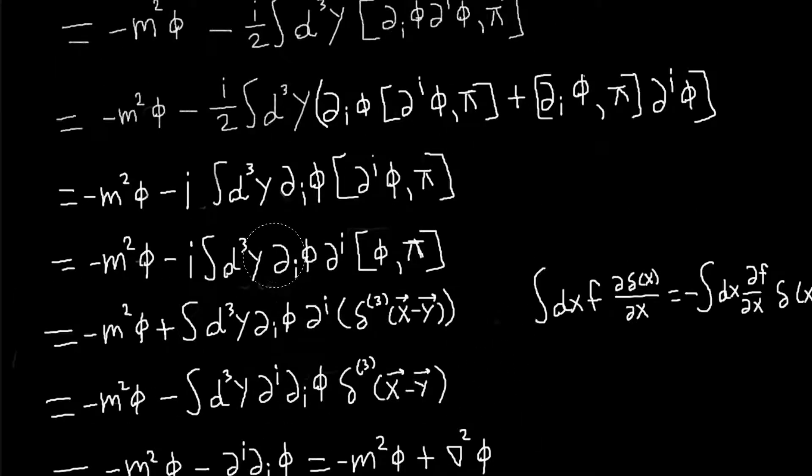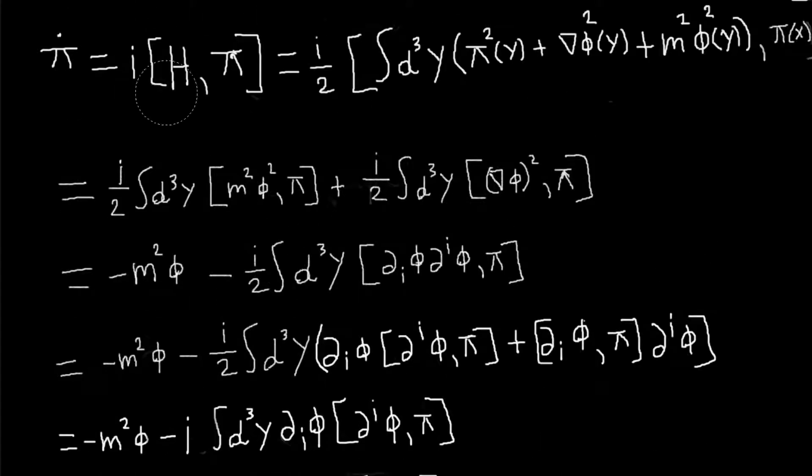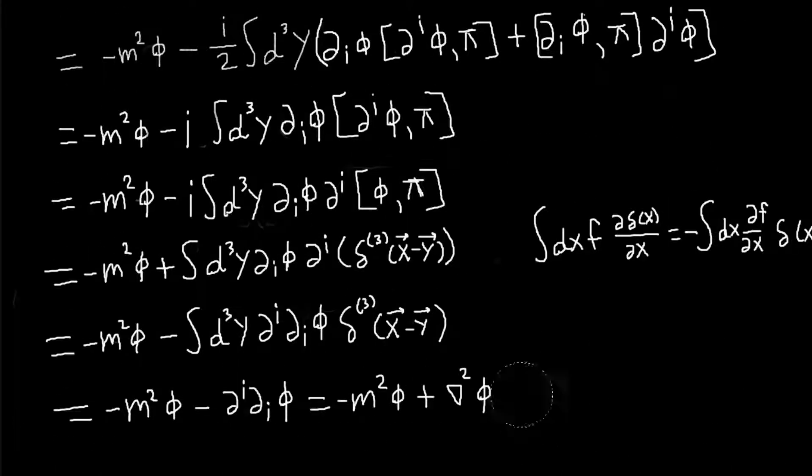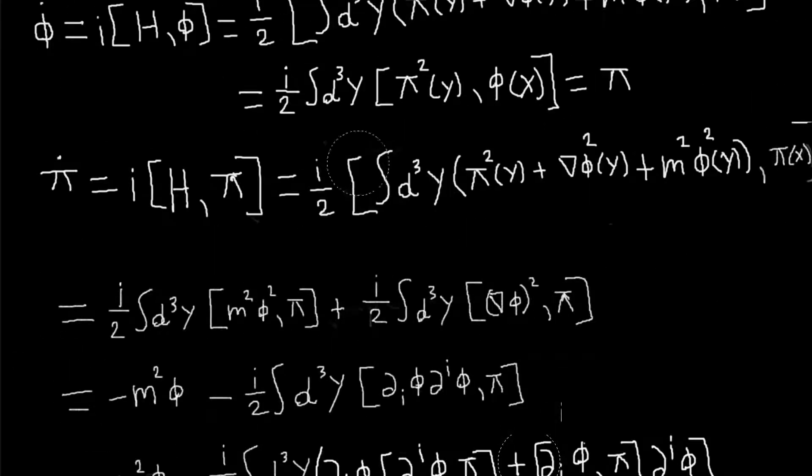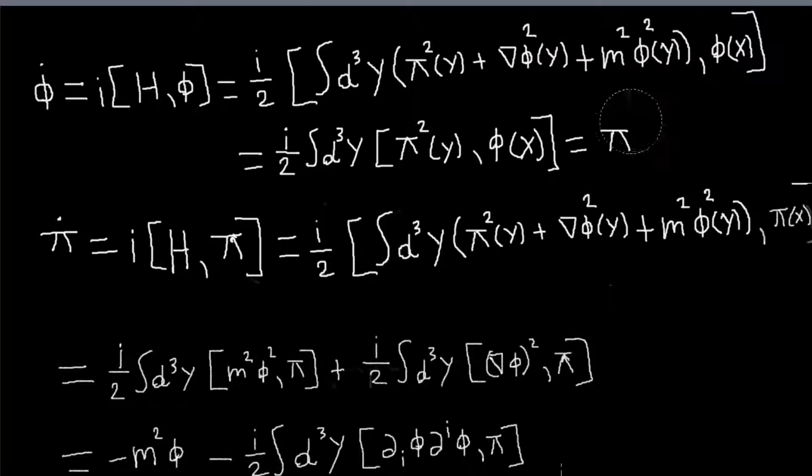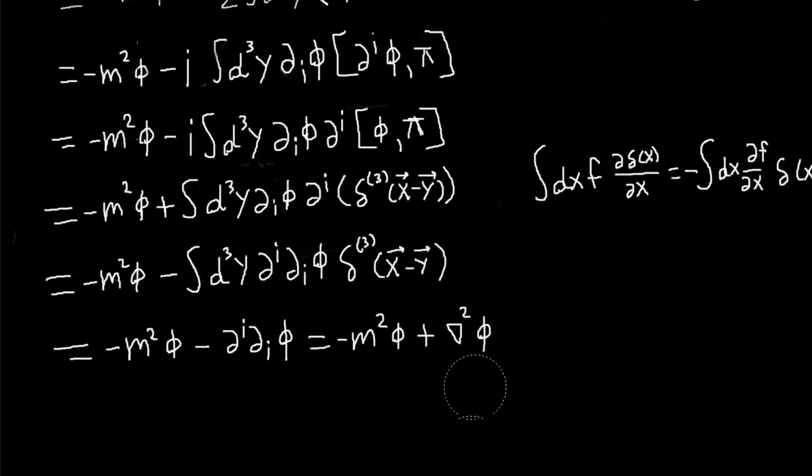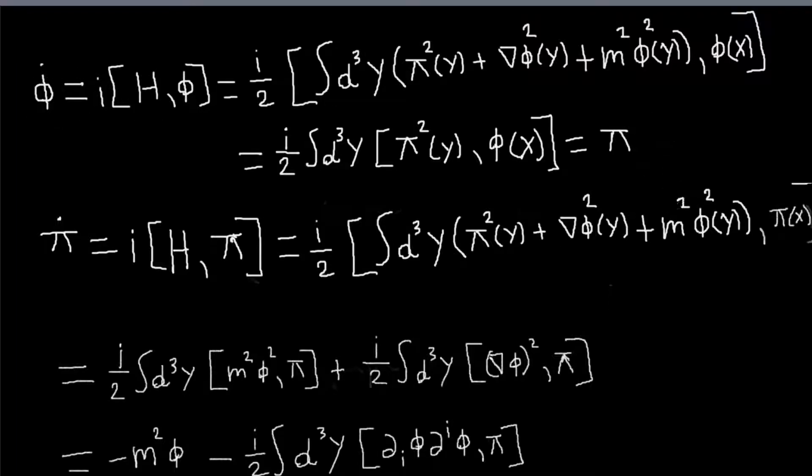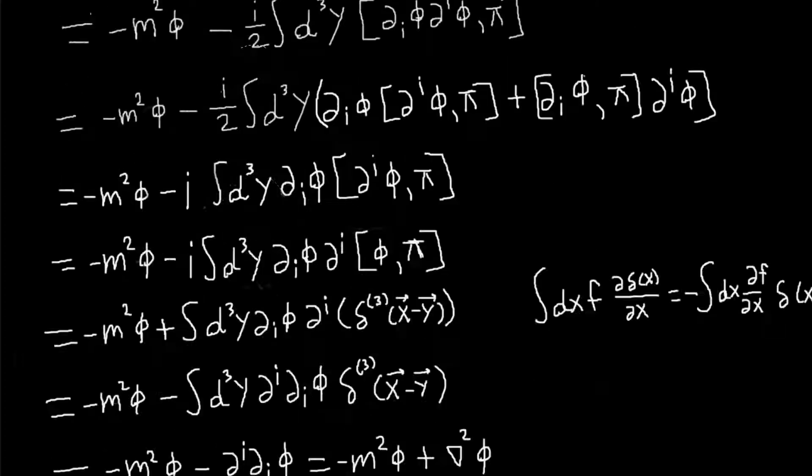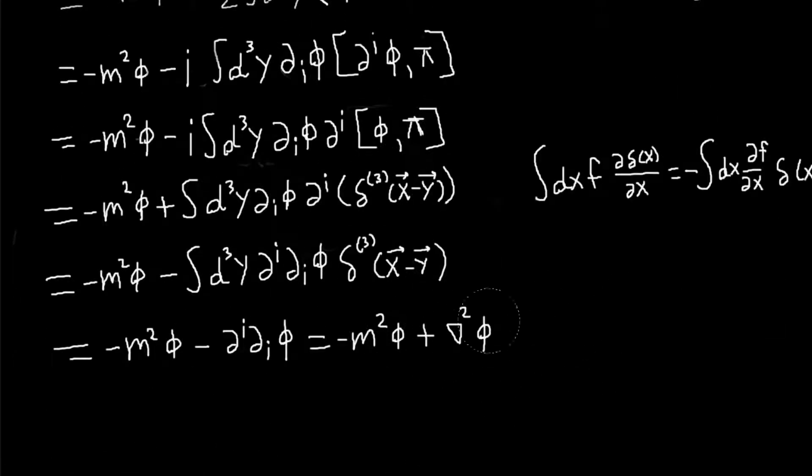And that is, basically, the Klein-Gordon equation. Or, sorry, if you combine these two equations, so we have pi dot is equal to this, and we have phi dot is equal to pi, so if I take the time derivative of this expression, I get phi dot dot equals pi dot, and so phi dot dot is equal to this, which is the Klein-Gordon equation.